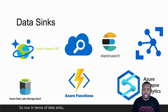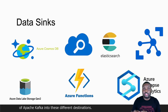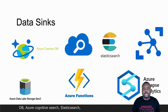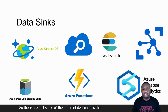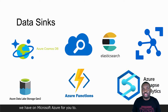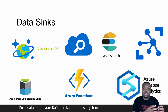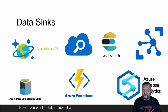In terms of data syncs, we have several destinations where you can pull data out of Apache Kafka. Some of them include Azure Cosmos DB, Azure Cognitive Search, Elastic Search, IoT Hub, Azure Data Lake Storage Gen 2, Synapse Analytics, and Azure Functions. These are just some of the different destinations available on Microsoft Azure for you to push data out of your Kafka broker into these systems and platform solutions.